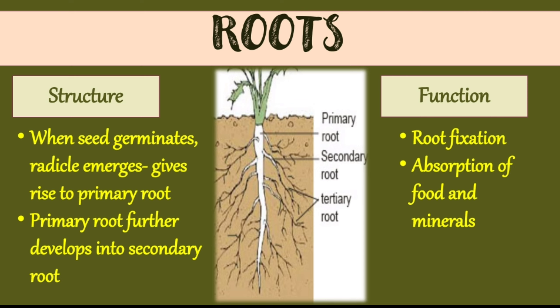What is the function of roots? Root helps in fixation — it keeps the plant fixed in the soil so that it does not move from one place to another. The second function of the root is to absorb food and minerals and transport them to other parts of the plant like the stem and leaves.